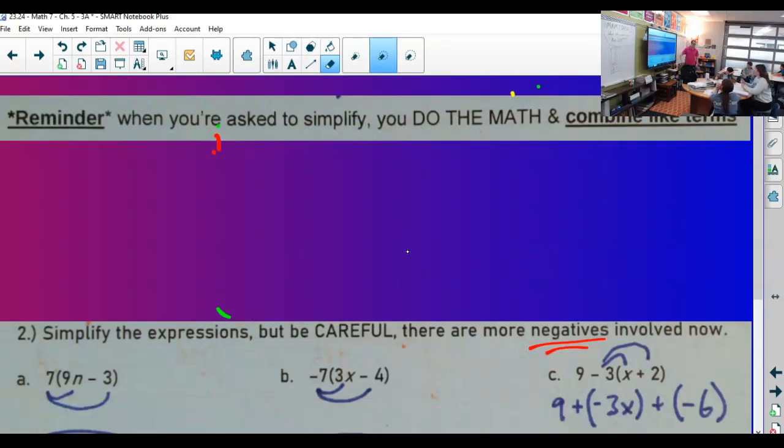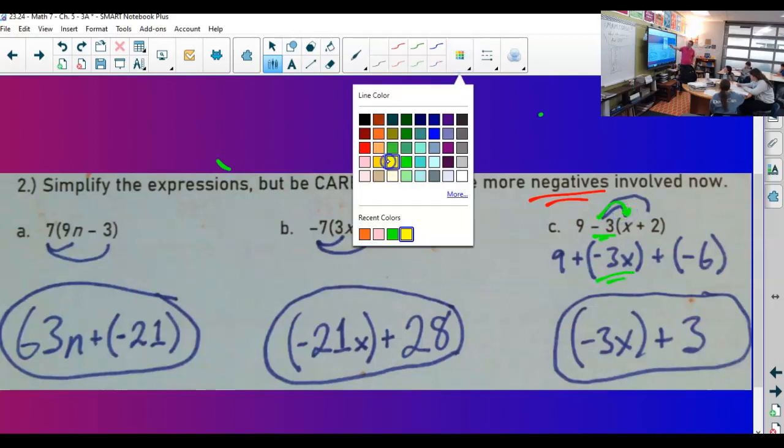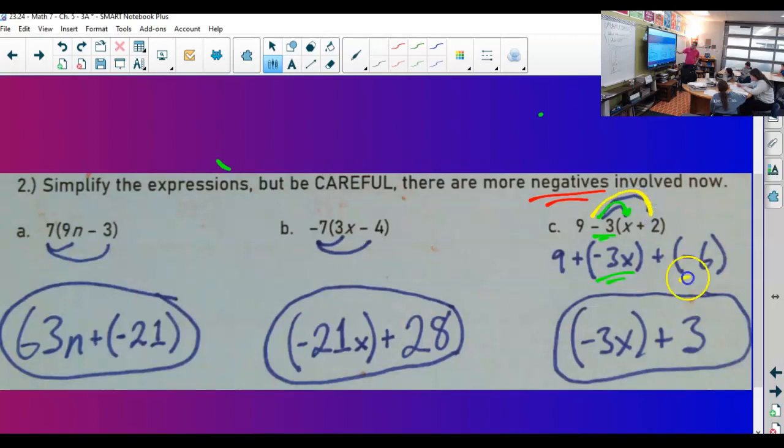We look at C. Can I start with 9 minus 3? No, because subtraction does not come first. I'm just going to show you what I did here. What number is this? Negative 3. Negative 3 times x - negative 3x. Negative 3 times 2 - negative 6. What can we then combine? The 9 and the negative 6.